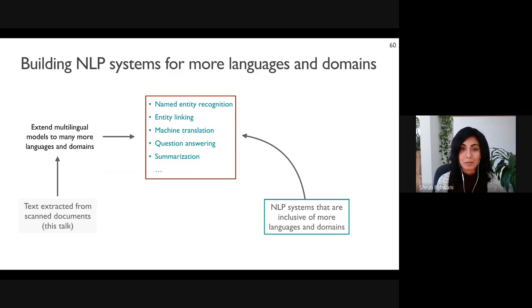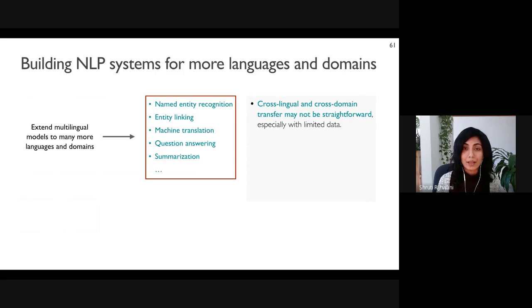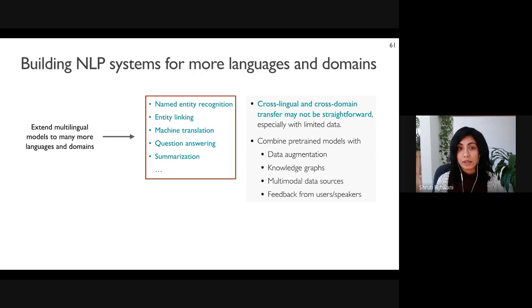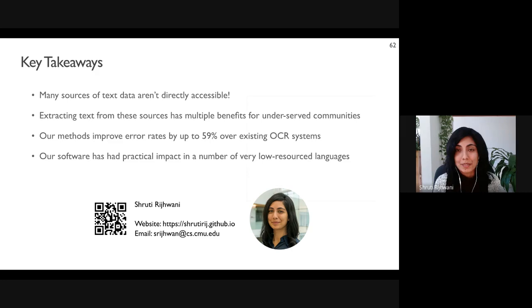Some of my previous research focuses on models to improve named entity recognition and entity linking for low-resource languages. In the future, I aim to use multilingual models to build systems for several more tasks like machine translation and summarization that work well for a large number of domains. Cross-lingual and cross-domain transfer may not be straightforward for low-resource settings, so it may be necessary to develop models that take advantage of pre-trained language models in combination with data augmentation, knowledge graphs, multimodal information, and feedback from speakers of the language. Thank you so much for your time and I'm happy to take any questions.